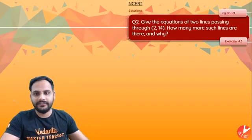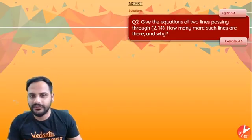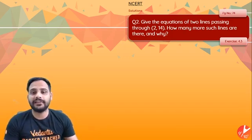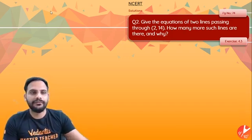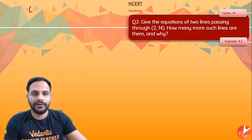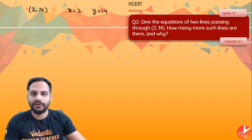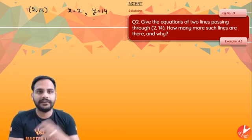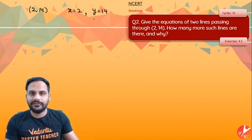So the first question we have is this: given the equation of two lines passing through the point 2 comma 14, how many more such lines are there and why? So we need to find out the equations of lines which will pass through the point 2 comma 14, that means x is equal to 2, y is equal to 14. Now we need to write the equation in x and y such that those equations are going to satisfy this point.